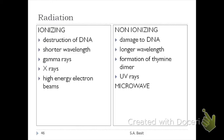Ultraviolet rays are an example of non-ionizing radiation. You have seen the UV light in the biosafety cabinet — there is a switch; when you turn it on, that is the UV light. So there will be ultraviolet rays when the biosafety cabinet is off and UV is active. Avoid prolonged exposure to UV light because it can damage your DNA and cause mutations.